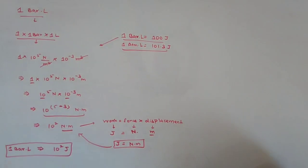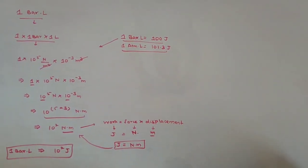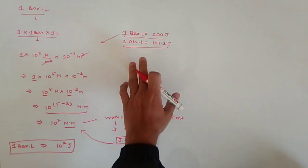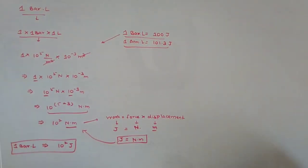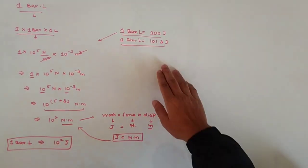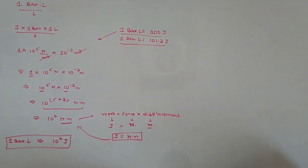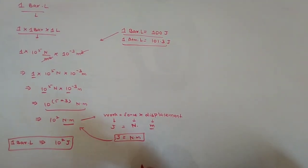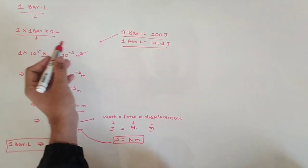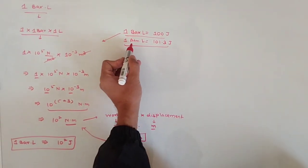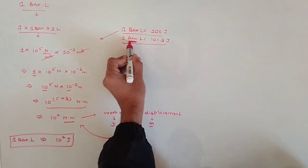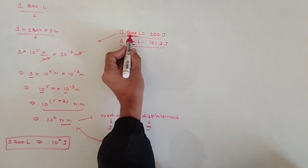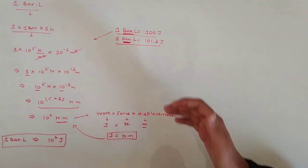I hope that part is clear. Now we move to the second part: 1 atmosphere·litre. The only difference between 1 bar·litre and 1 atmosphere·litre is the unit of pressure — bar versus atmosphere.